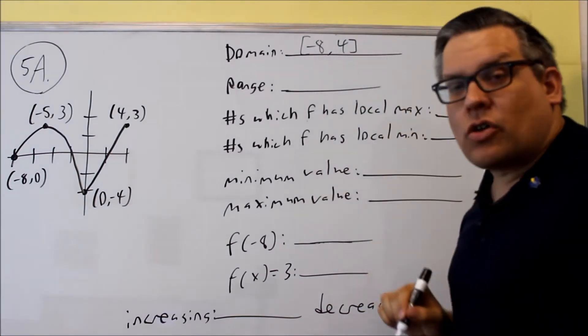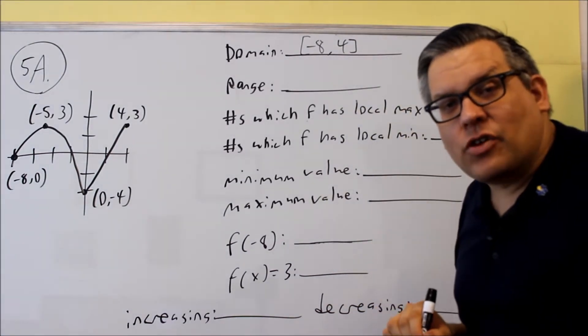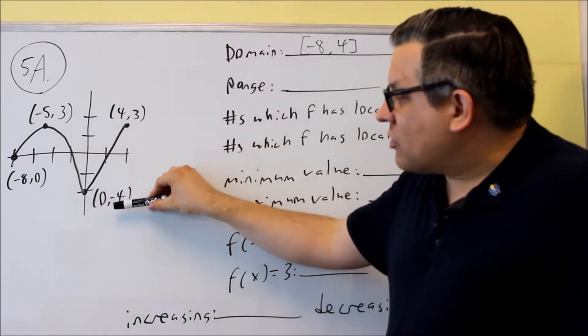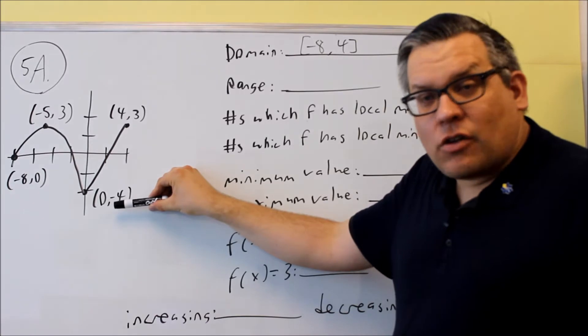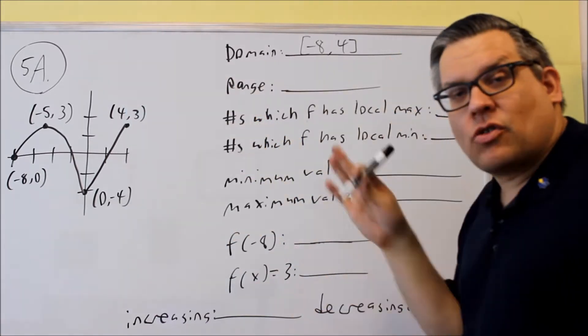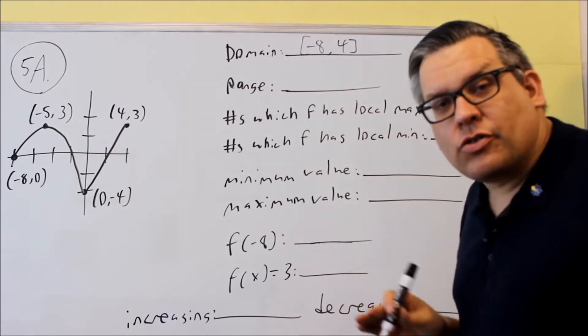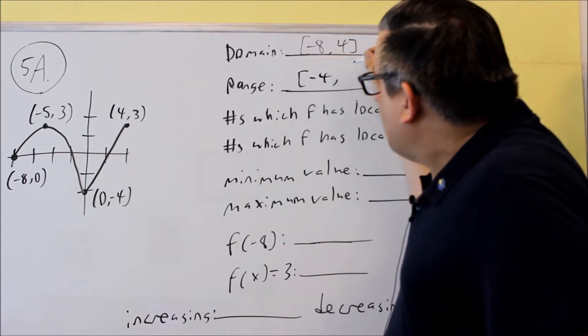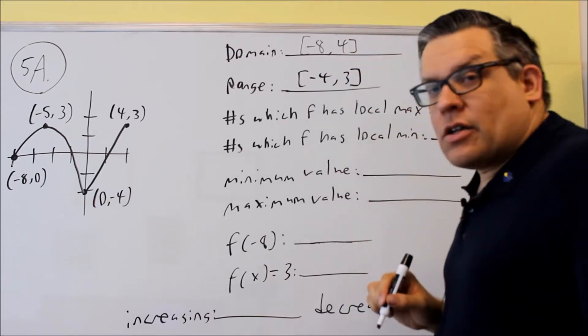So domain is only talking about x values the graph uses. The range is talking about the y values the graph uses. The smallest y value here is negative 4. The largest y value is 3. Make sure you put these in order from smallest to largest whenever you do interval notation. So you're going to do negative 4 to 3. Those are brackets.